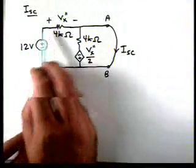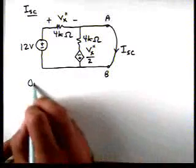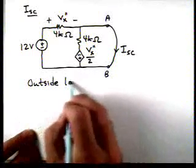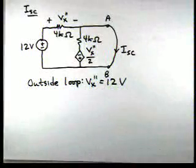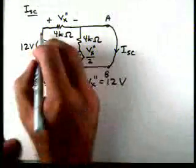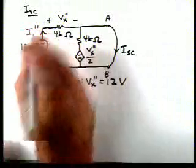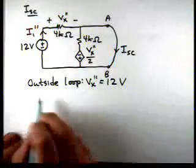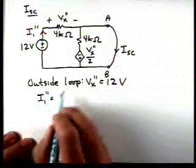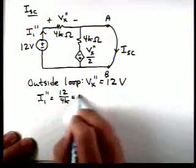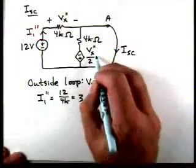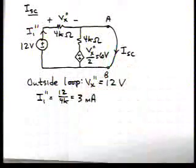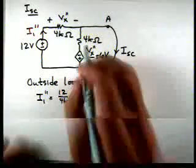And if we take some observations and say, well, let's apply Kirchhoff's voltage law around the outside loop. So around the outside loop, you'll notice that we get Vx double prime equals to 12 volts. If, again, we define this current as I1 double prime, then I1 double prime is going to be 12 volts divided by 4 kilohms, which is 3 milliamps.